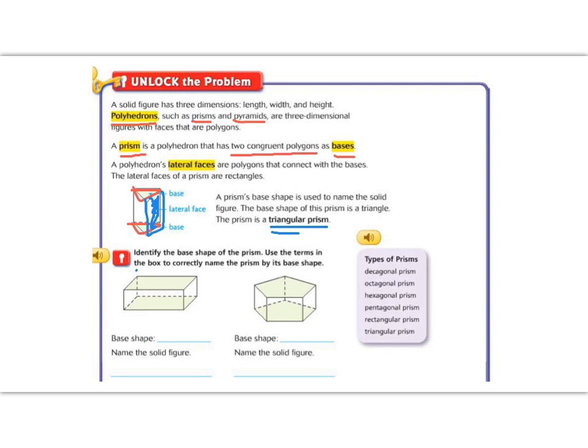Let's look at the next prism. If we look at the base shape, we know that that is a rectangle. So below, the base shape is a rectangle. So we call this a rectangular prism.